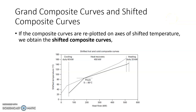In this video we are going to discuss grand composite curves. First, let us look at the shifted composite curves diagram. If we plot the shifted temperature and corresponding enthalpy, we get shifted composite curves. The basic difference between shifted composite curves and the actual temperature composite curve is that at the pinch point both curves touch each other. On an actual temperature scale there would be a difference of delta T minimum, but for shifted temperature both hot and cold streams are touching at the pinch point, whereas actually they are delta T minimum apart.